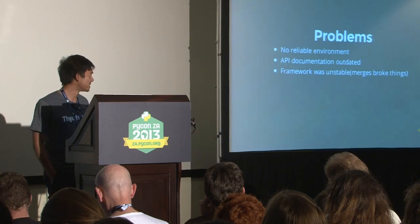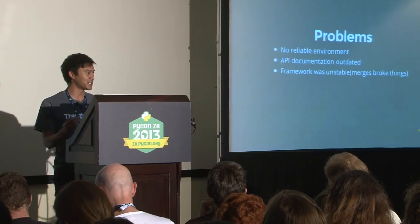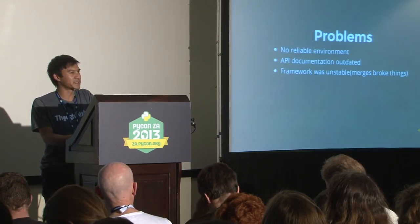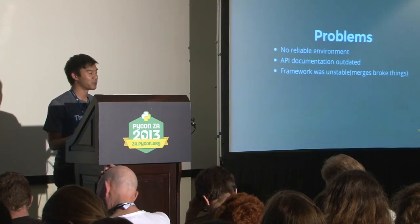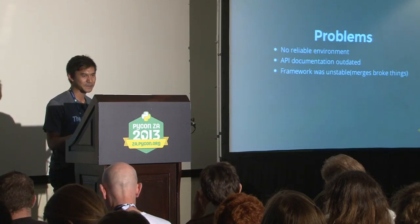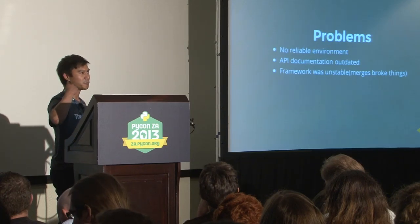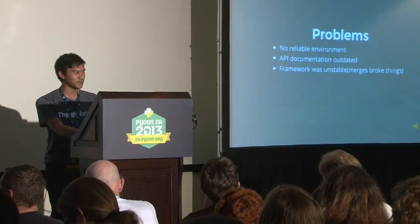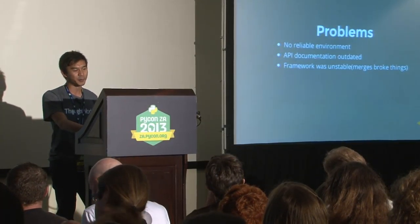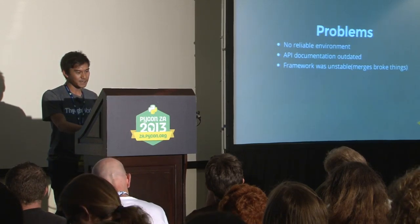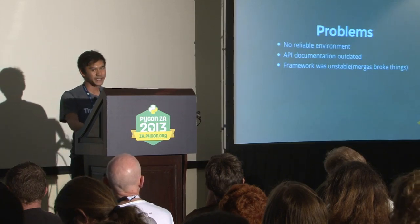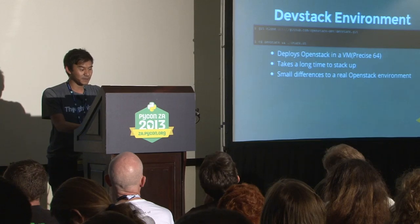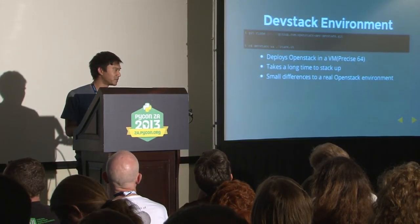We ran into some dev problems. We didn't have a reliable environment to work with. Spinning up an OpenStack environment with a provider could get quite expensive, especially if you're running lots of tests against it. We also found the API documentation was a bit outdated — some endpoints didn't return what the documentation said; the implementation did another thing. So there was really no way to guarantee we could use the documentation. And the framework was still being developed by a few upstream core developers. Every time we merged from upstream, it broke things. We needed a way to find out as soon as possible when an upstream merge broke our code.